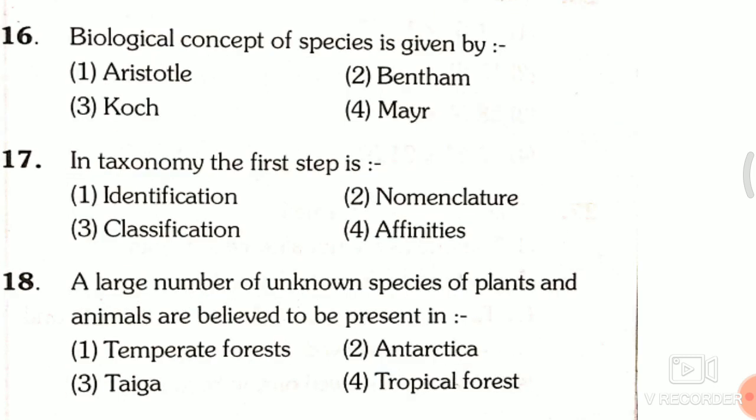Question 16: Biological concept of species is given by — first, Aristotle; second, Bentham; third, Koch; fourth, Mayr. The answer is the fourth one, that is Mayr.